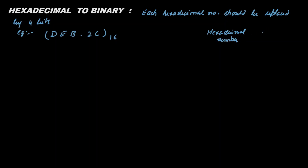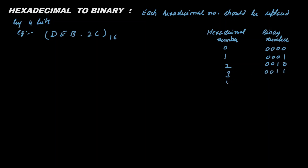This table will make the task simple, with binary numbers on the other side. For 0 you write 0000, for 2 you have 0010, C is 0011 — you can make a table all the way up to F. Here, D is 13, and 13 in binary is 1101.